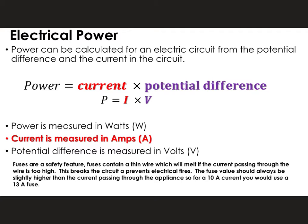When we look at electrical power, power can be calculated for an electrical circuit from the potential difference and the current in the circuit, where power is equal to current times potential difference. We use the symbols P for power, I for current, and V for potential difference. Remember that power is measured in watts, current is measured in amps, and potential difference is measured in volts.